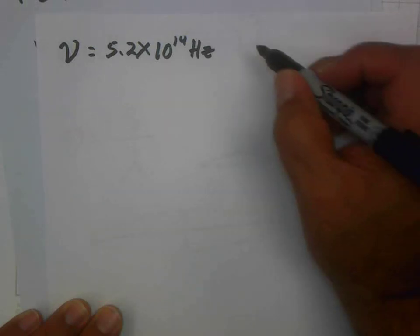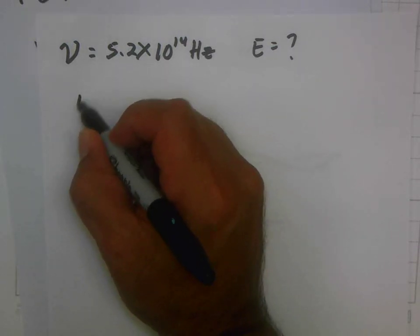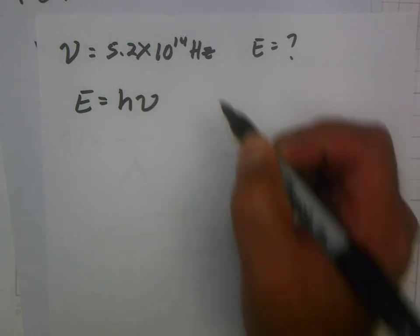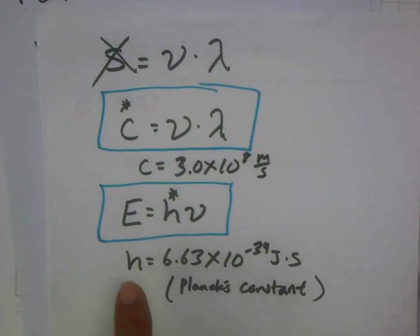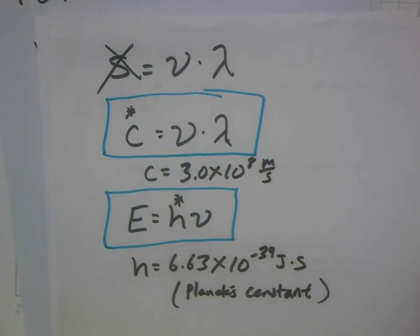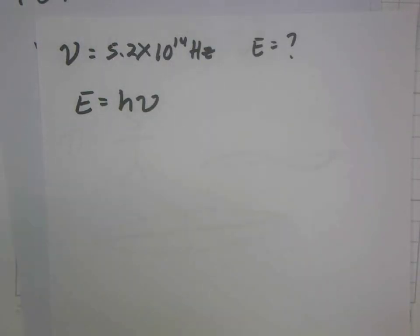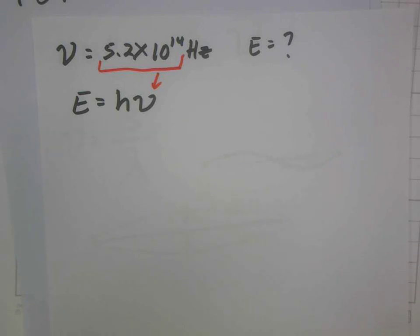You are asked, what is the energy? And guess what? You have enough information here. We're going to use our new equation we just learned. E is equal to h times frequency. And you will notice that this is the one we just learned right here. E is equal to h times frequency, and you're given h, Planck's constant. So you plug that in. All you're going to do is take the frequency you just got, plug it in here, and multiply that by Planck's constant.